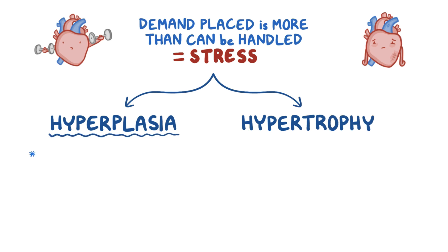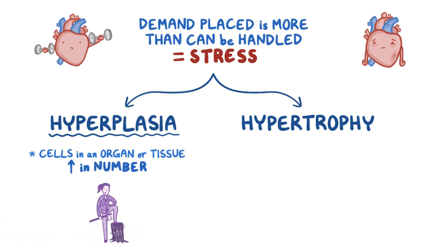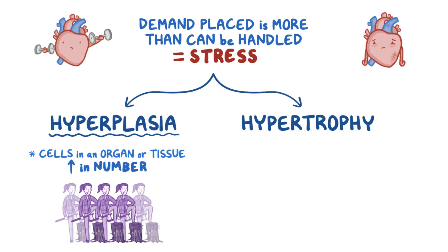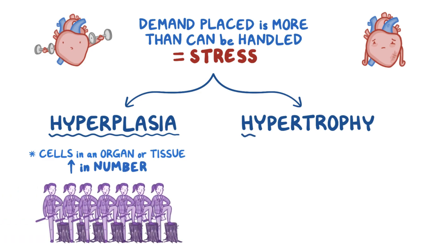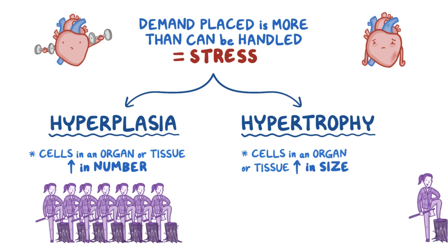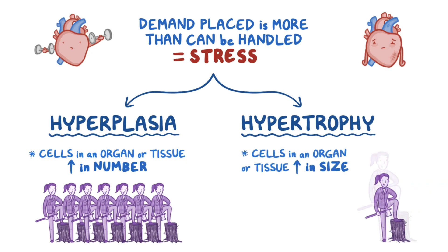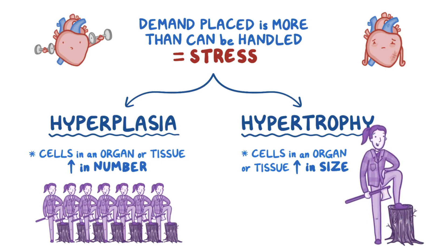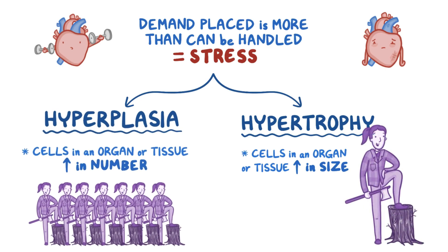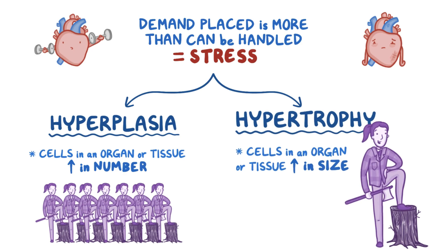Hyperplasia refers to the process where cells in an organ or tissue increase in number, so it's like hiring a bigger pack of lumberjacks. Hypertrophy is when the cells in an organ or tissue increase in size, like if the lumberjack gets really tough so that she can cut down twice as many trees. So hyperplasia: bigger pack, and hypertrophy: tough lumberjack.